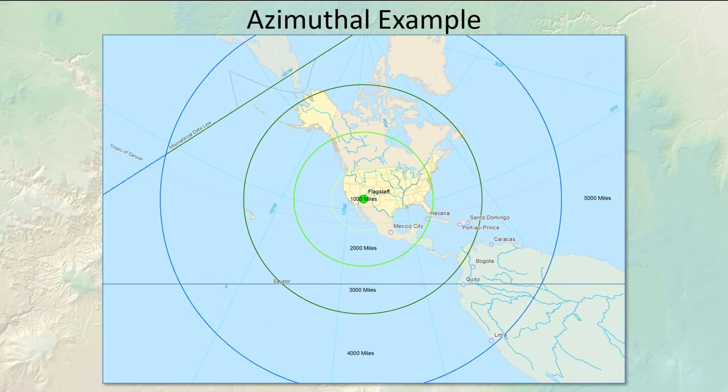Azimuthal maps are the same way — they're accurate from a point to any other point or along a particular line. This azimuthal example shows that if I put a ruler from Flagstaff to any other point, the line along that ruler will be the shortest path — the great circle path to that point. The planar projections we discussed earlier — the stereographic and the orthographic — all have that interesting property. Those planar projections are all azimuthal maps.